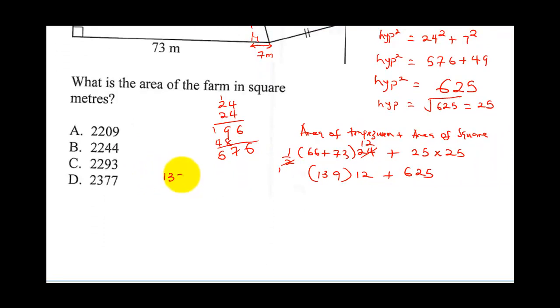So 139 multiplied by 12, let's do that. That will give us 2 times 9 is 18, carry 1. 2 times 3 is 6 plus 1 is 7. And you have 1. And 1 times 139 is 139. So when you sum this up, this is going to give you 1668 plus 625. So when you sum up 1668 plus 625, you're going to get 8 plus 5 is 13, carry 1. 6 plus 2 is 8 plus 1 is 9. 6 plus 6.